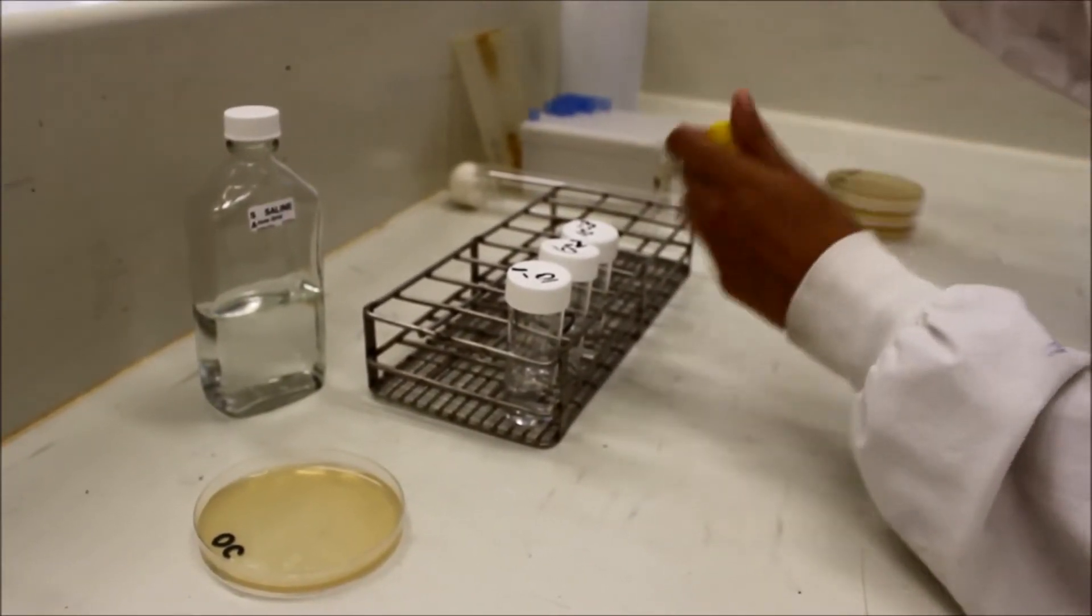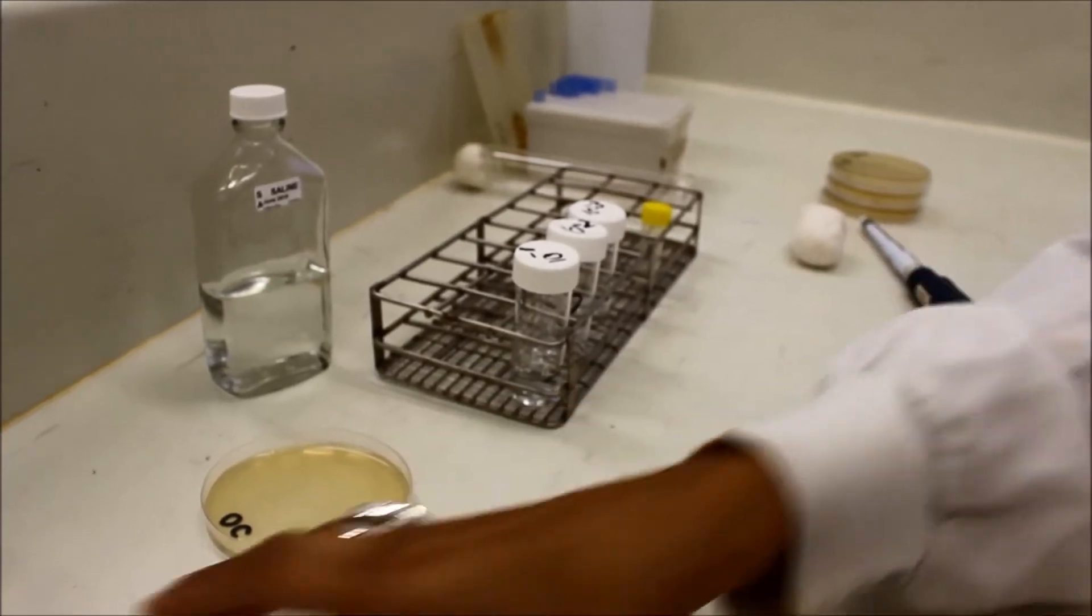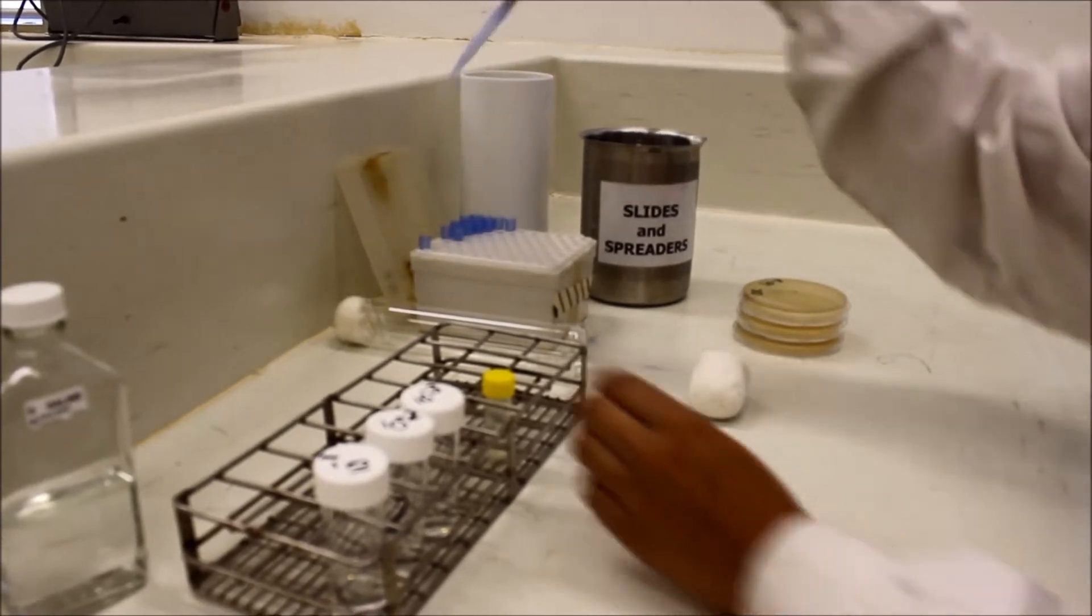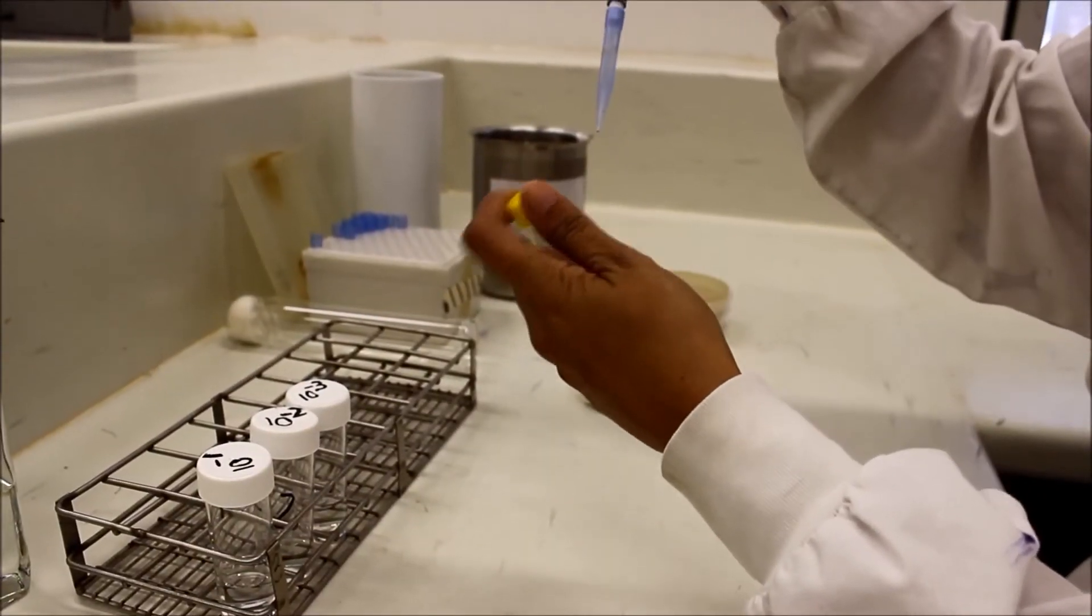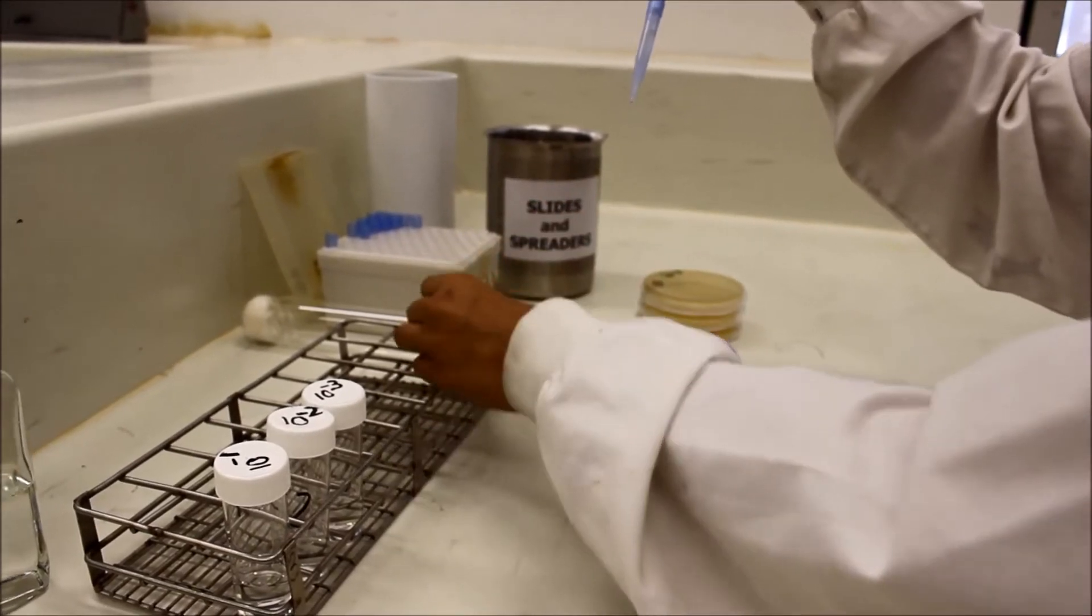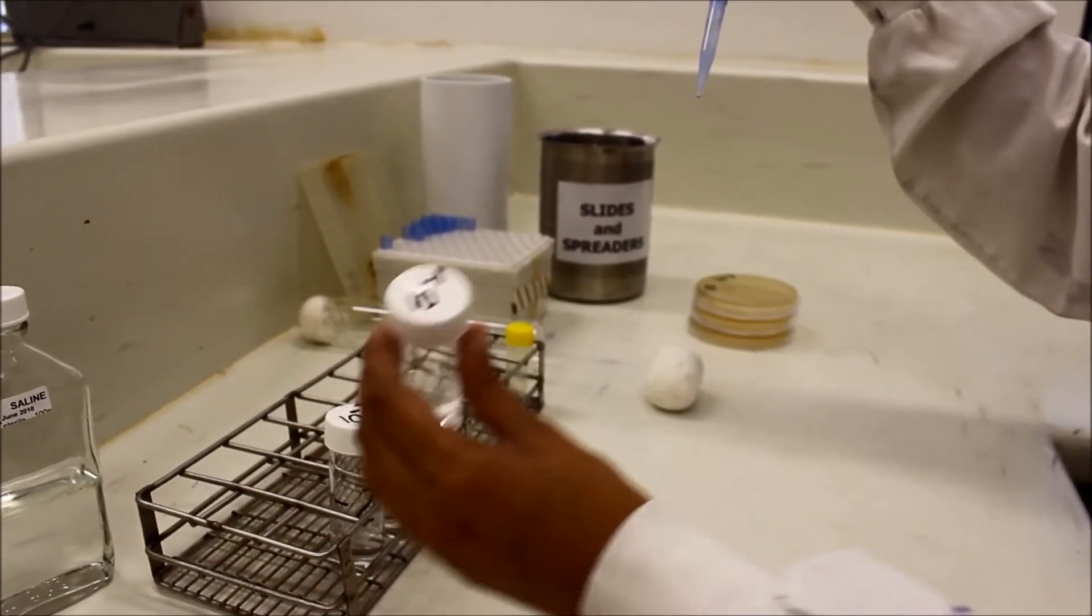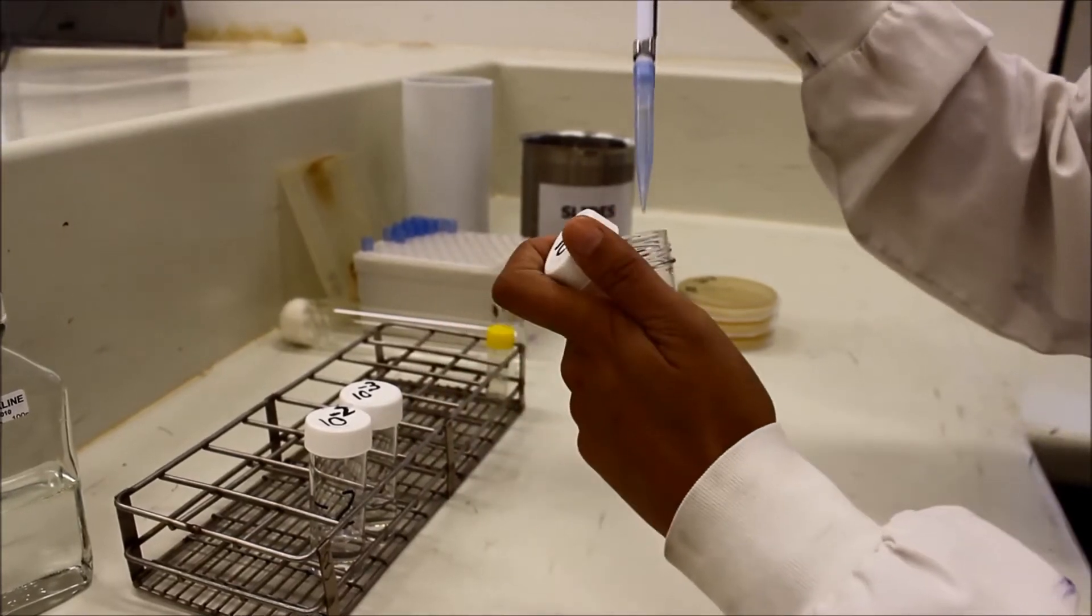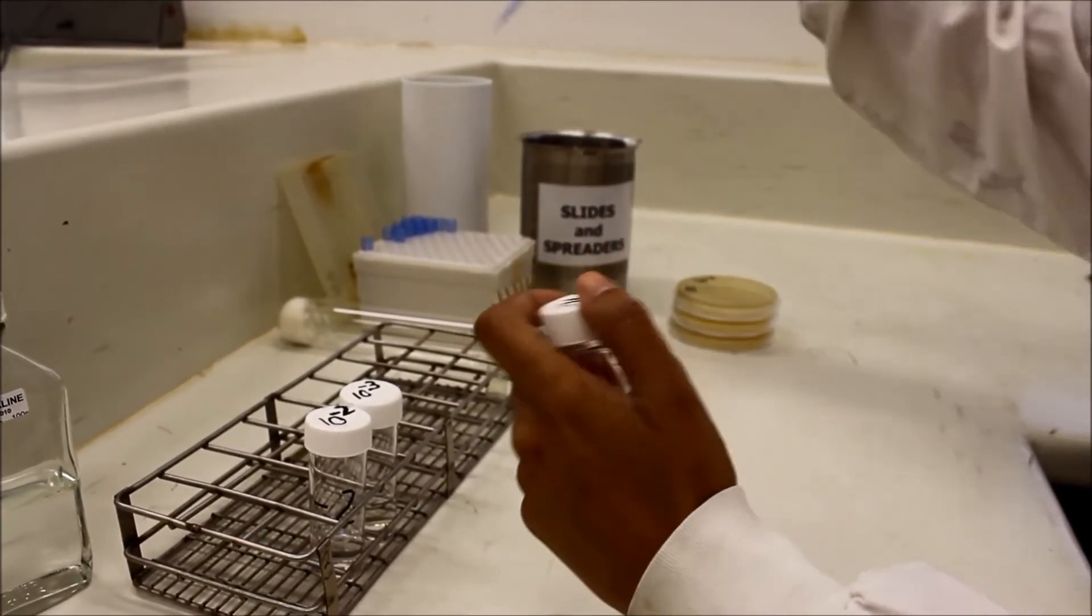When you are done, make sure to replace the lid of your plate. Use one milliliter of these pooled washes in your first 1 in 10 dilution. Make sure you mix thoroughly between dilutions.